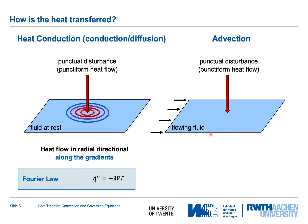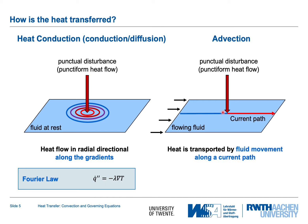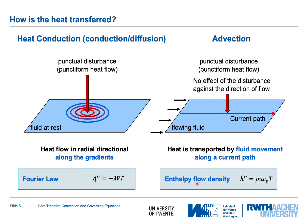In advection, we have a fluid flowing from left to right with a heat source. Before the fluid approaches the source, nothing happens — it is simply cold. At the heat source, the fluid is heated, and the hot fluid moves away. Heat is transported along the flow path, and there is no upstream effect since there is no local molecular interaction. The relevant quantity is the enthalpy flow density, defined as the product of density times velocity times heat capacity times temperature.